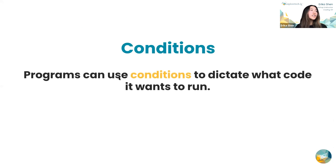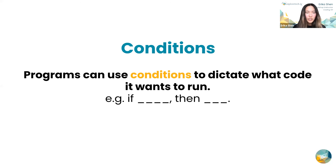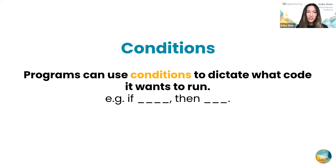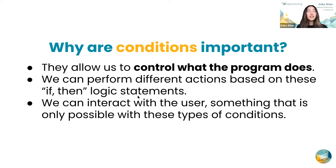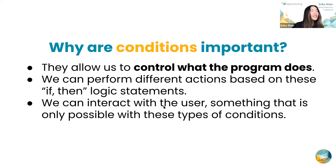Next, we have conditions. Programs can use conditions to dictate what code it wants to run. The most common way you'll encounter this is just like an if-then statement — so like, if today is sunny, then go to the beach. It's a prerequisite that has to be fulfilled in order for the next action to follow. Conditions are important because they allow us to control what the program does depending on the circumstances, and they allow us to perform different actions based on these if-then logic statements. They also allow us to interact with the user.